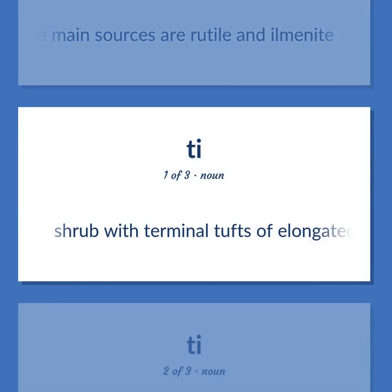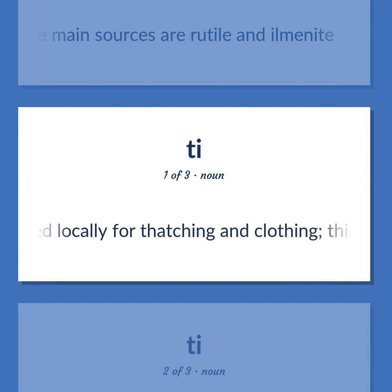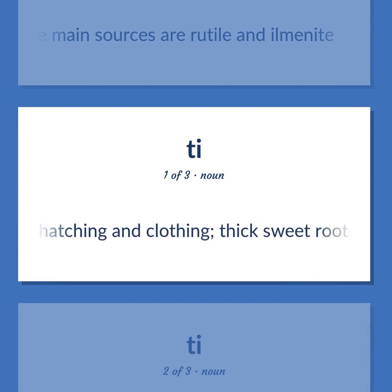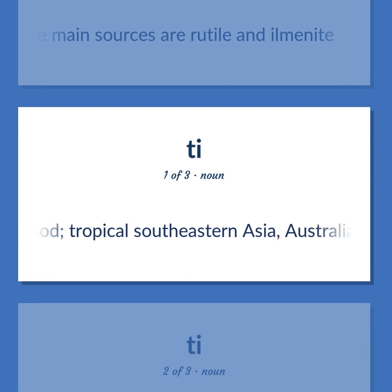Shrub with terminal tufts of elongated leaves used locally for thatching and clothing. Thick sweet roots are used as food. Found in tropical southeastern Asia, Australia, and Hawaii.